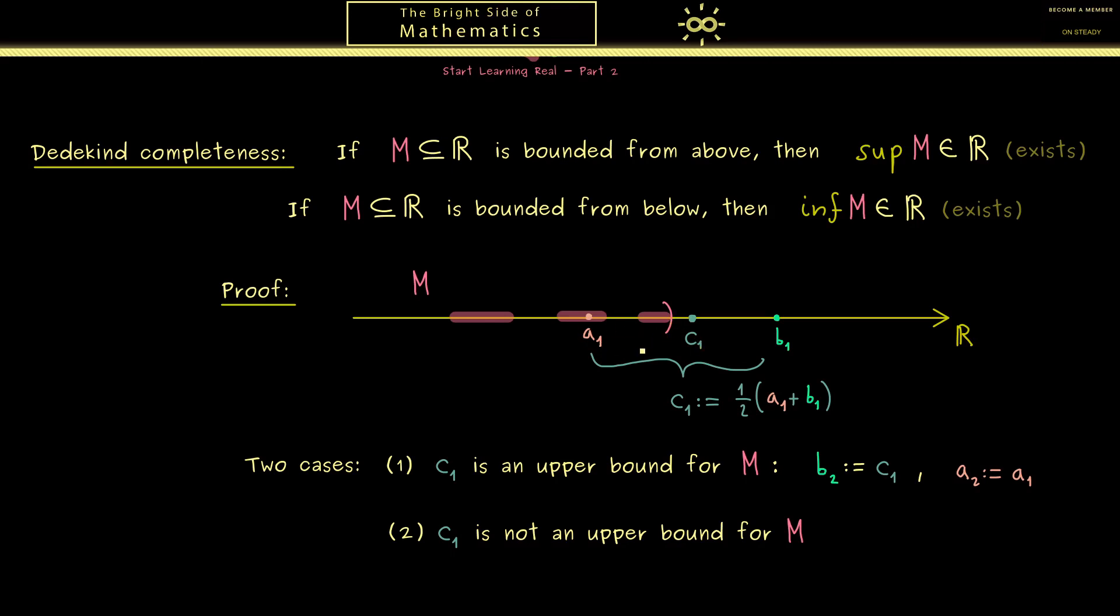In this case you then would see that the middle point lies left to some points of M. Therefore then we have to think what we do in this second case. Now as I said here it is possible to find the point x in M which is larger than c_1. Then of course this new larger point should be our new a_2. So with this we shifted the left point to the right. And then we don't need to change the right hand side with b_1.